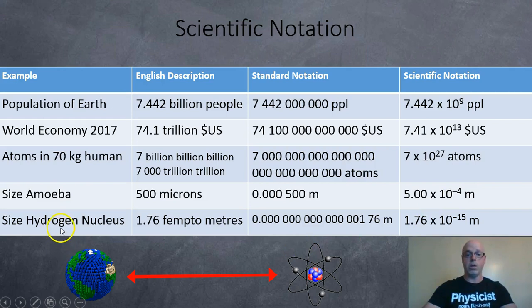And finally, the size of a hydrogen nucleus. It's around 1.76 femtometers. That's about approximately 0.00000000000000176 meters. So in that case, we have to jump over 3, 6, 9, 12, 15 jumps to the decimal. 1.76 times 10 to the negative 15 meters.